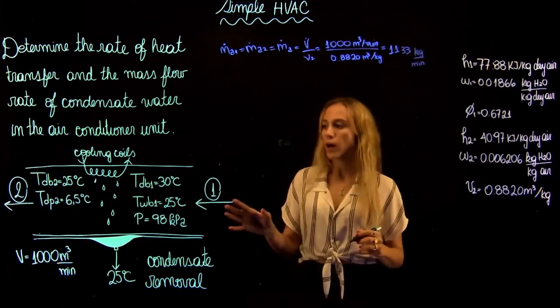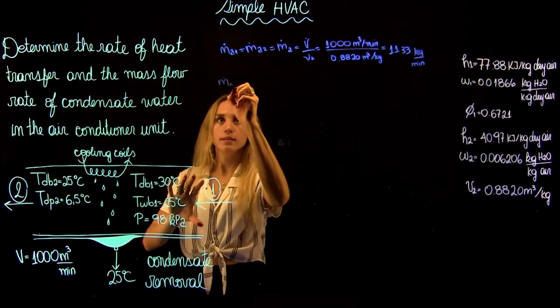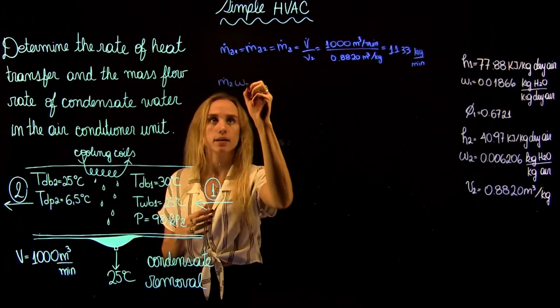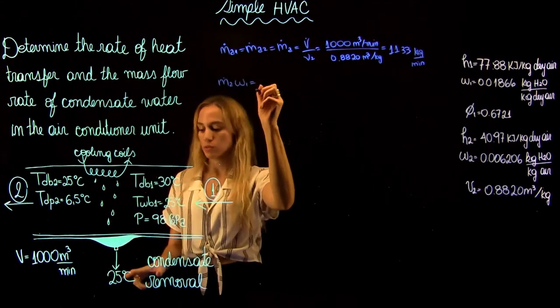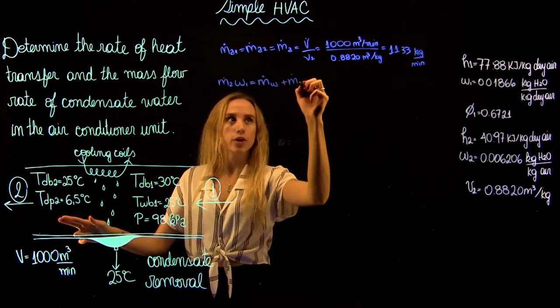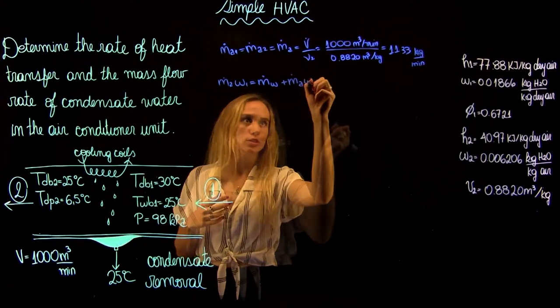Now let's write the water mass balance. We have a flow coming in of air with a content of water, so we multiply this by omega 1. It's going to equal the mass flow rate of water plus the flow rate of air coming out times the content of water for that, so that's omega 2.